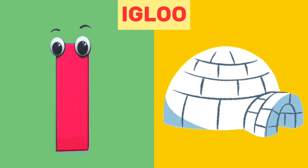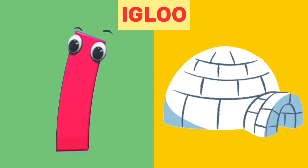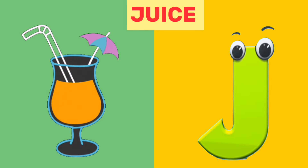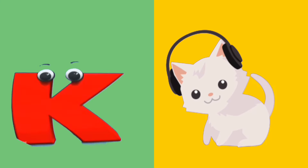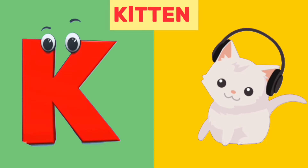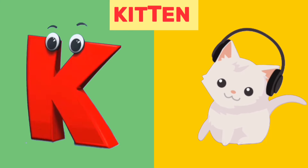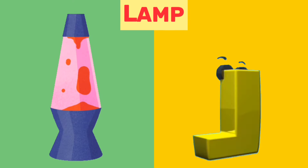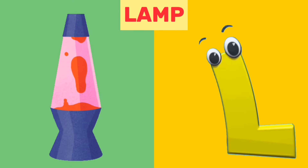I is for igloo. I, i, igloo. J is for juice. J, j, juice. K is for kitten. K, k, kitten. L is for lamp. L, l, lamp.